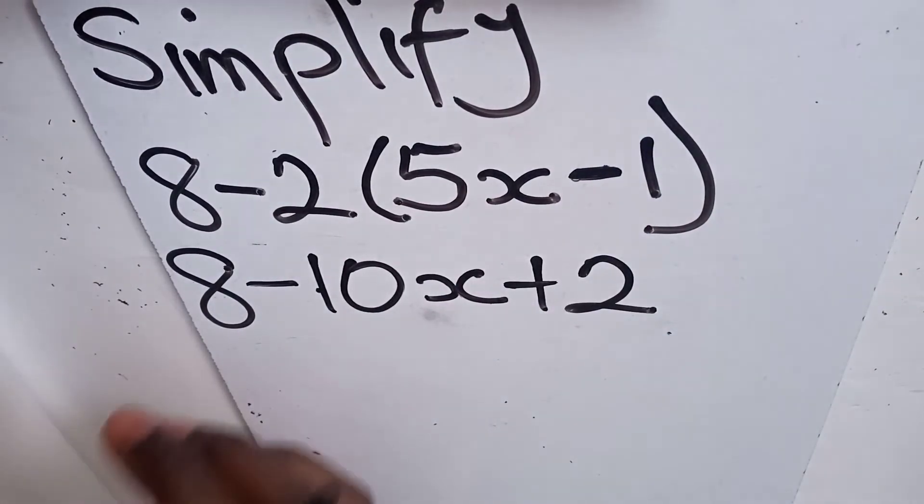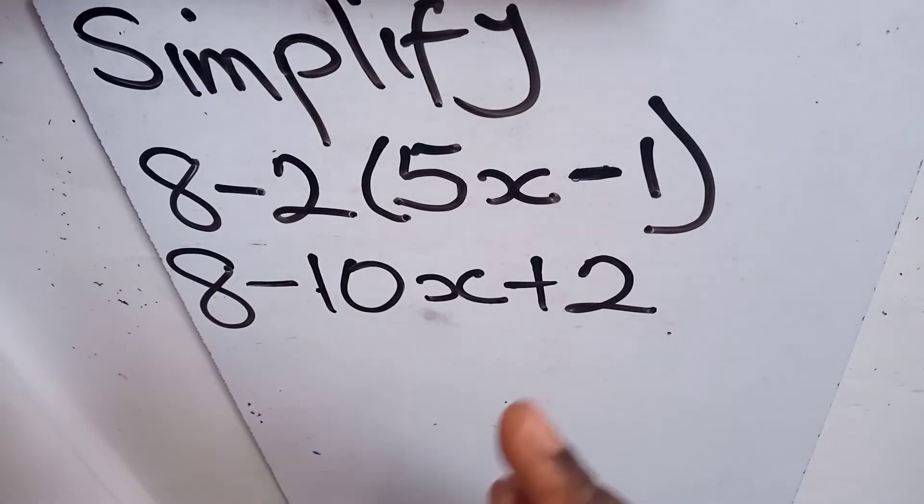This is because any time a negative number multiplies a negative number, the result should be positive. This one is a principle in mathematics. All right, let's continue.